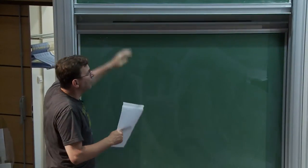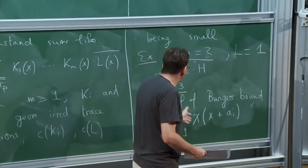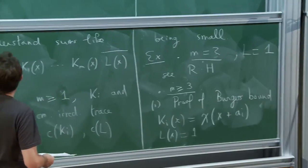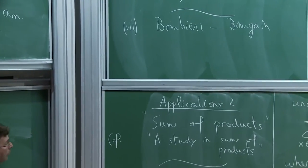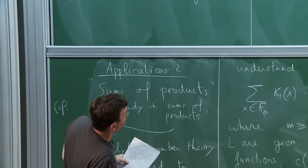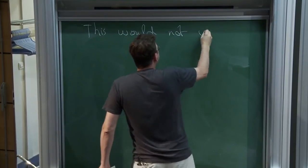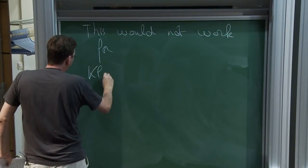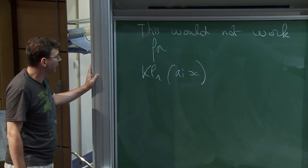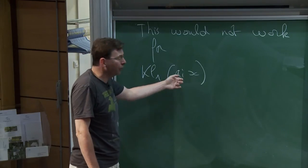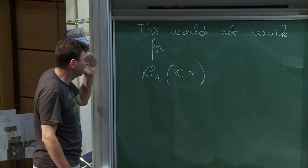So the argument is very simple and extremely powerful, but sometimes it's not enough. Among the examples, the Burgess bound and the same argument works when the ai's are distinct since they are shifts. But this would not work for KLr of ai x — the situation in Fouvry–Michel–Rivat–Sarkozy and in FGKM — where everything is always ramified at 0 and infinity independently of i. So you cannot distinguish these shifts by saying that they are not ramified in the same place: same ramification. Something just a little bit more complicated works for the Bombieri–Bourgain sum.